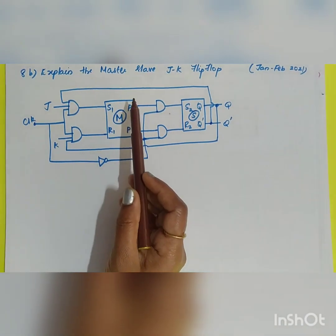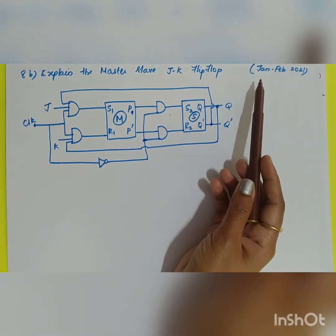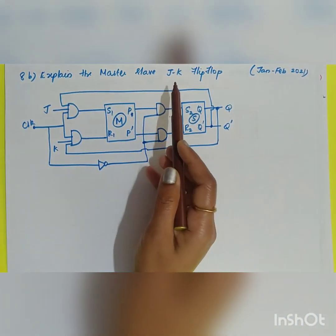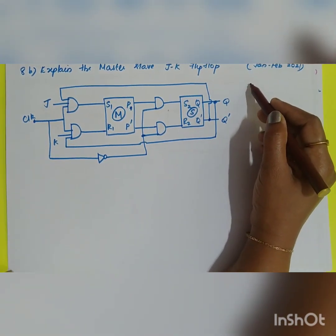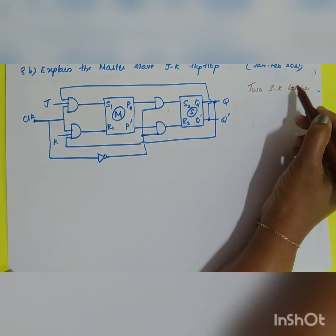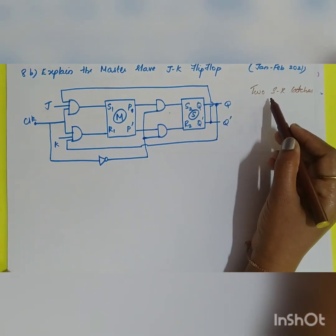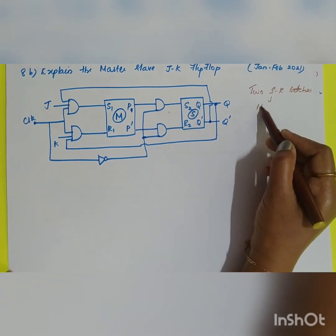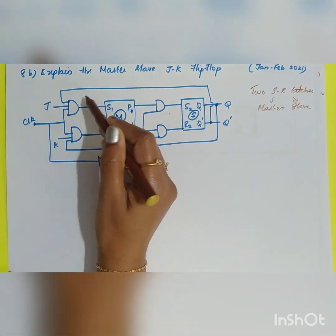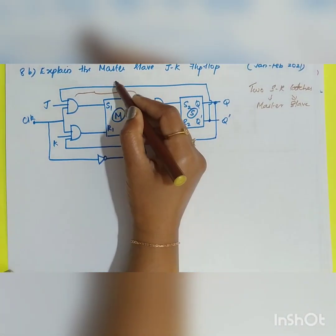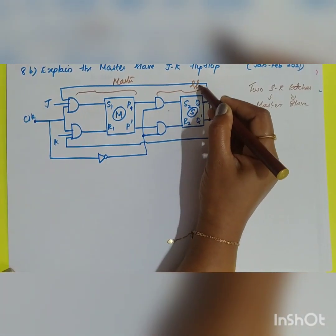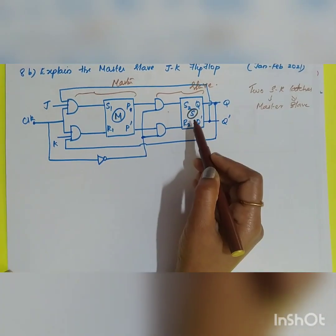The next question is: explain the master-slave JK flip-flop, from the January-February 2021 question. The master-slave JK flip-flop is nothing but the combination of two SR latches, where one SR latch acts as a master and the other acts as a slave. The first SR latch is your master, and the second is your slave.